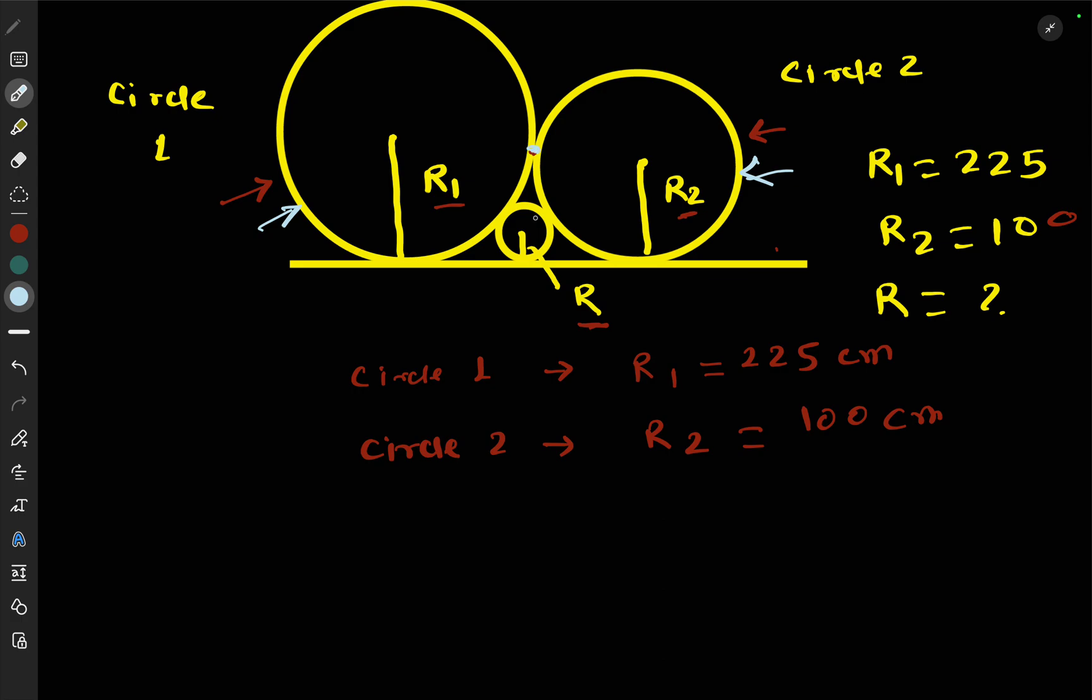A third smaller circle is drawn here, and they all lie on a horizontal line. Circle 1 and 3 are touching, Circle 1 and 2 are touching, and Circle 2 and 3 are touching. We need to find the radius of this smaller circle, which I've denoted by R.